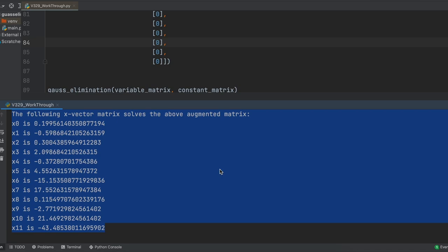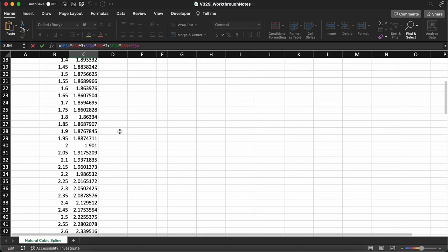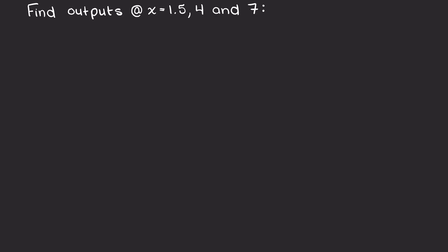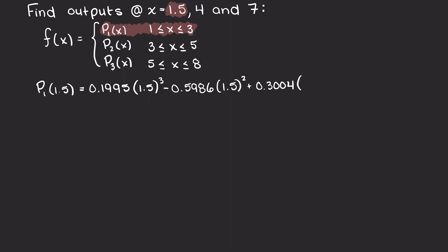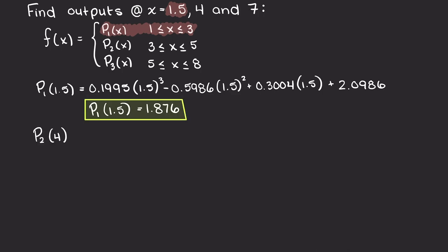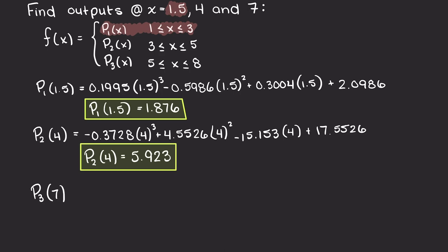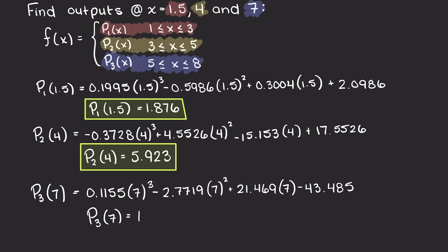To visualize these polynomials, I will plot them inside Microsoft Excel, keeping in mind our domains — as you can see this results in a very nice smooth function. Back on our blackboard, we solve the second question: evaluate the interpolating polynomials at inputs of 1.5, 4, and 7. Writing out our polynomials in their respective domains: for an input of 1.5 using the first polynomial, output is 1.876. For an input of 4 using the second polynomial, output is 5.9. For an input of 7 using the third polynomial, output is 10.58. We have now answered all the questions we were asked.